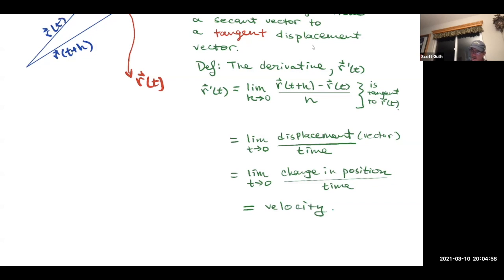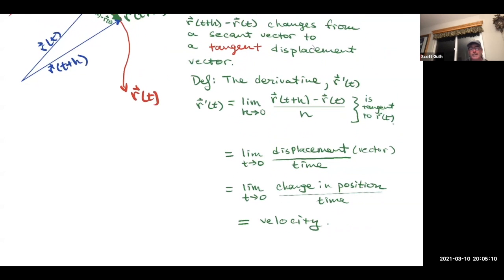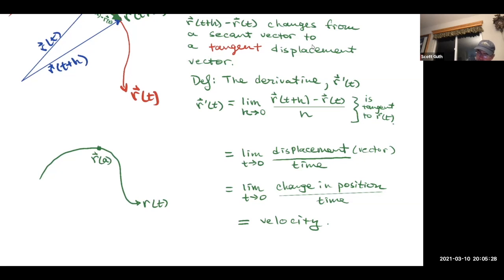The book doesn't call that a velocity vector until section 13.3 or 13.4, but we've got it all sitting here. So basically, we've got this curve r of t for all t, and if this is r of a, then the derivative is tangent to the curve, and we'll call it r prime of a.